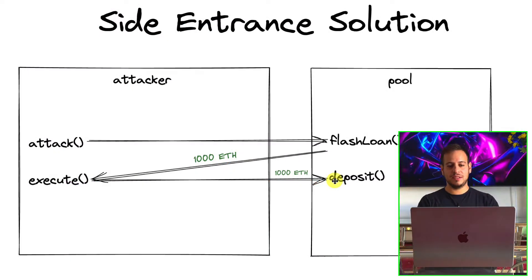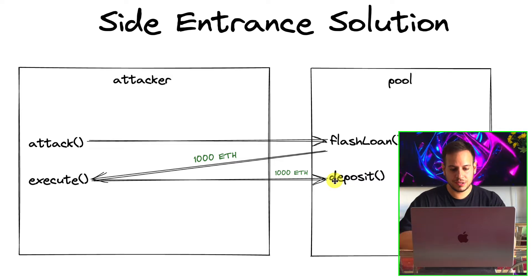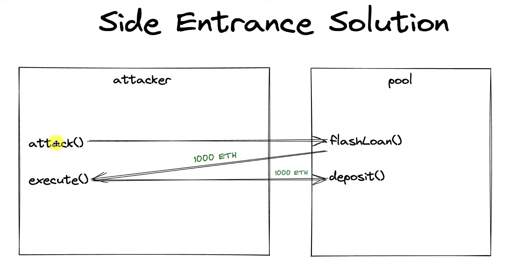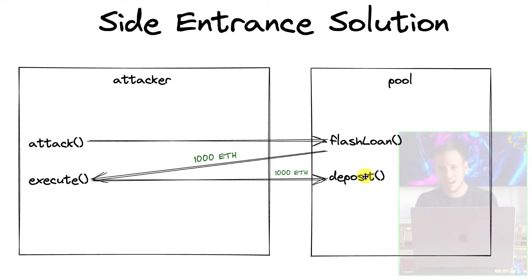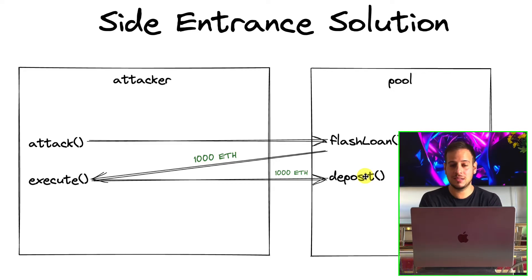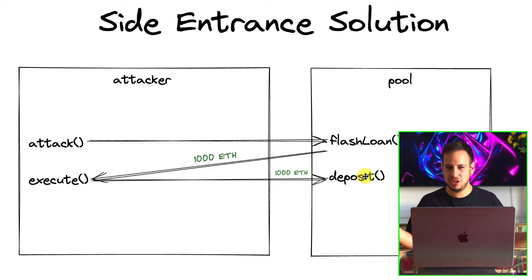To simplify the attack, here's a diagram. The attacker smart contract initiates the attack function, which calls the flash loan and asks to borrow 1000 ETH. The pool sends 1000 ETH to the execute function implemented by the attacker smart contract, which sends back the ETH to the pool smart contract through the deposit function — updating the balances to 1000. Quite genius!